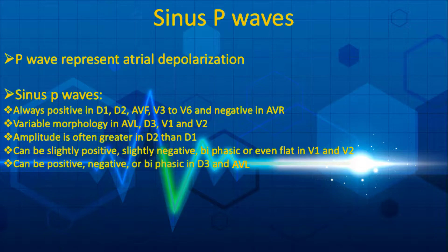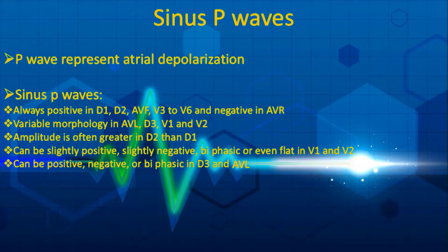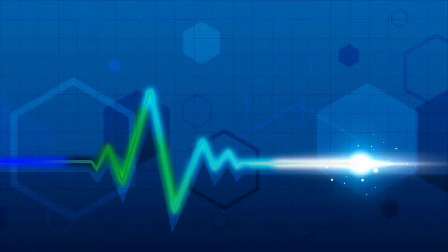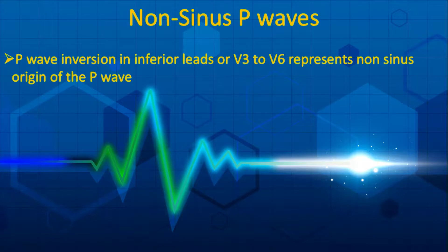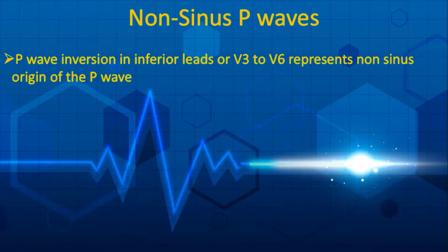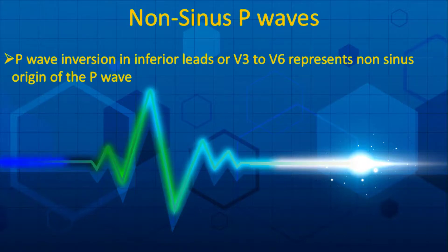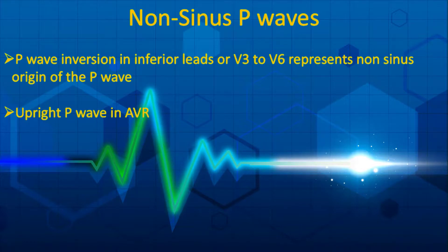The P wave can be positive, negative, or biphasic in D3 and AVL as well. In summary, P wave morphology is variable in D3, AVL, V1, and V2. P wave inversion in inferior leads or V3 to V6 represents non-sinus origin and is observed in ectopic atrial rhythm. An upright P wave in AVR is another finding of ectopic atrial rhythm.